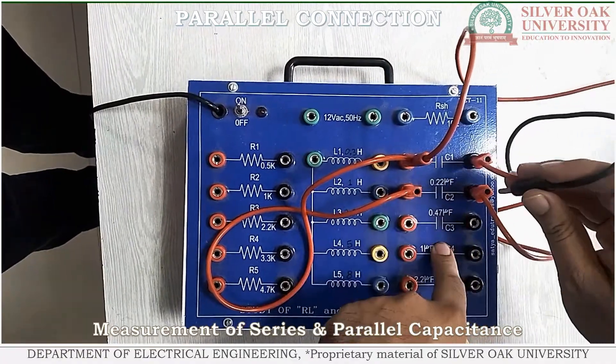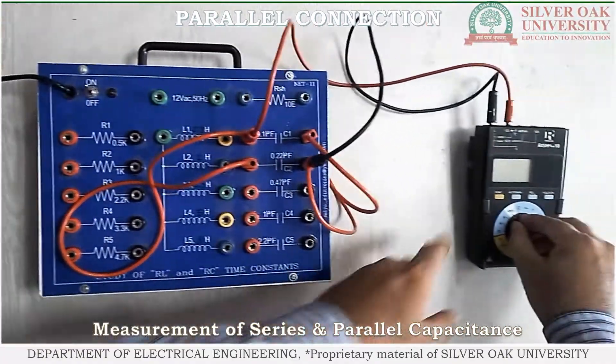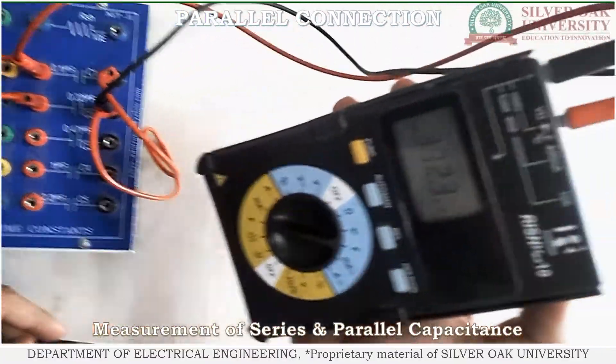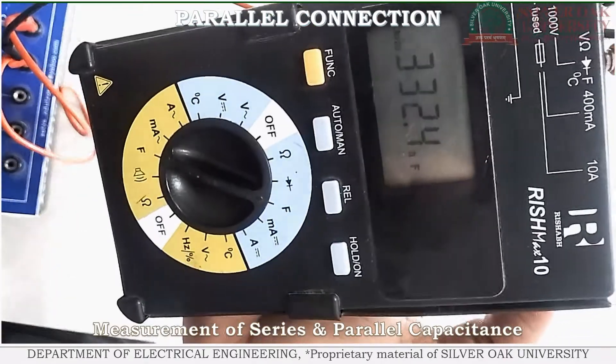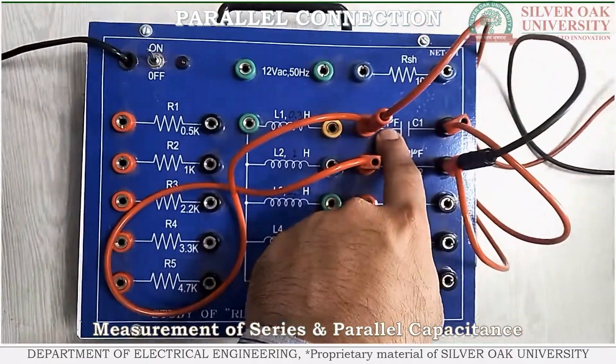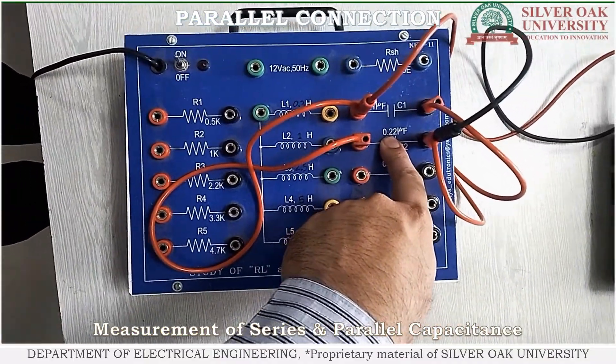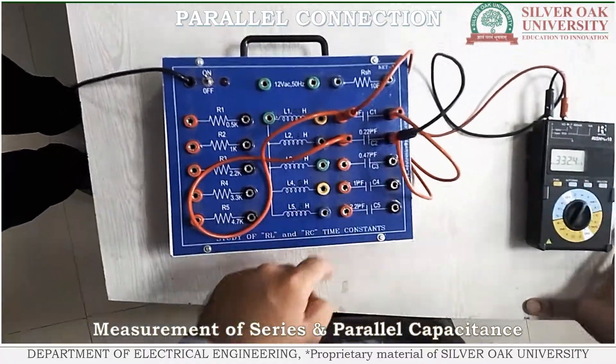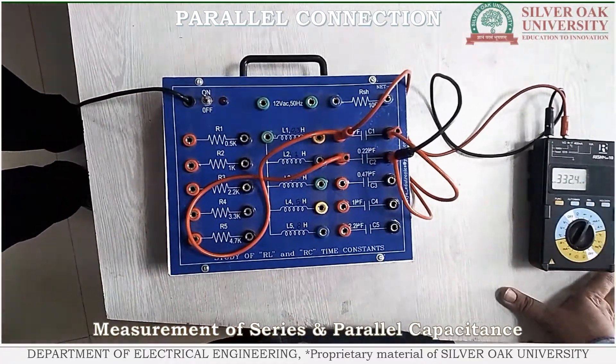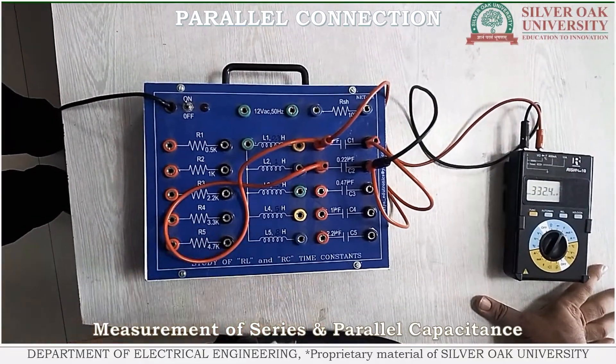So, one end will go into the 0.1 microfarad and the other end will go into the 0.22 microfarad. And you can see that the resultant will be 332.4 nanofarad which is roughly equal to the summation of 0.1 microfarad and 0.22 microfarad which is 0.32 microfarad, or 320 nanofarad, which is shown by the multimeter. So, this is the parallel connection of the two capacitors where their values are getting added.